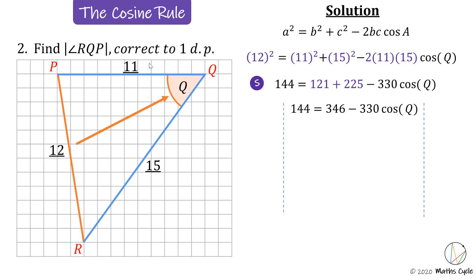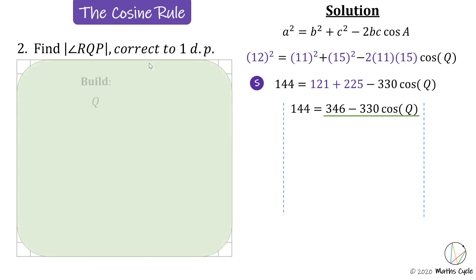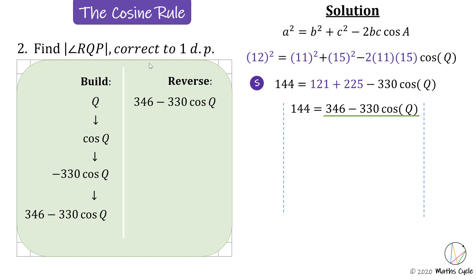The right-hand side is complicated, so we look at how Q is being built up: we have cosine of Q, which is multiplied by negative 330, and then 346 is added on. To reverse this using the balancing method: first cancel 346 by subtracting 346, then cancel the minus 330 multiplied by cosine Q by dividing by minus 330, then reverse cosine using cosine inverse to get back to Q.